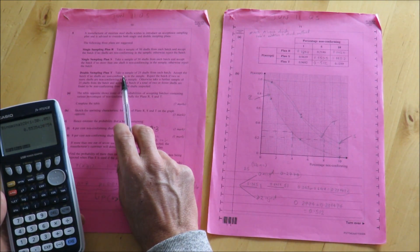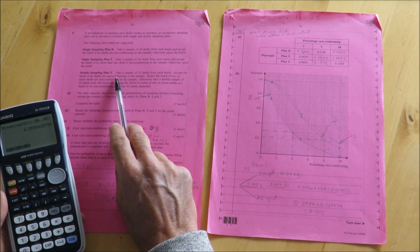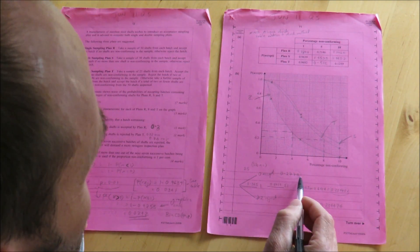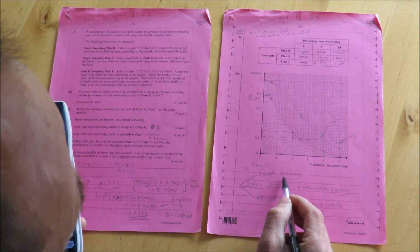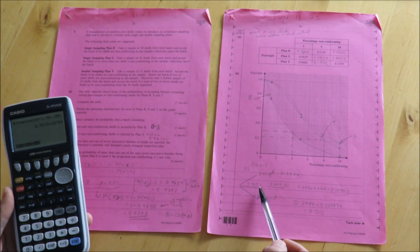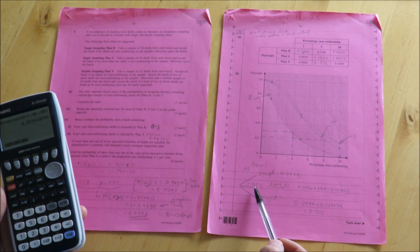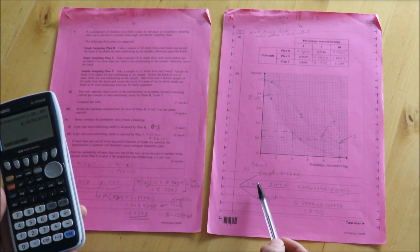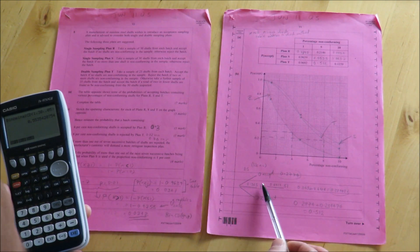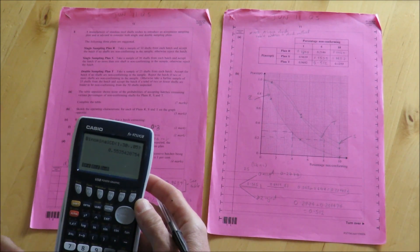So for the double sampling plan, initially a sample of 25 shafts is taken from each batch. We accept the batch if no shafts are non-conforming in the sample. So first of all there's a 0.2779 chance that the sample will be chosen outright because there were no conforming items. The double sampling nature of the plan is such that if one item is found to be non-conforming in the first sample, then a further sample of 25 shafts from the batch is taken, and the batch is accepted if a total of 2 or fewer shafts are experienced overall.